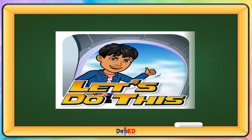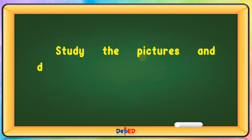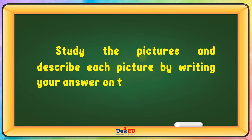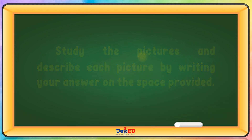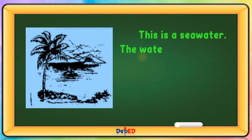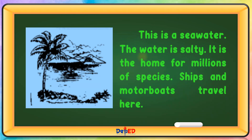Let's do this. Study the pictures and describe each picture by writing your answer on the space provided. This is sea water. The water is salty. It is the home for millions of species. Ships and motor boats travel here.